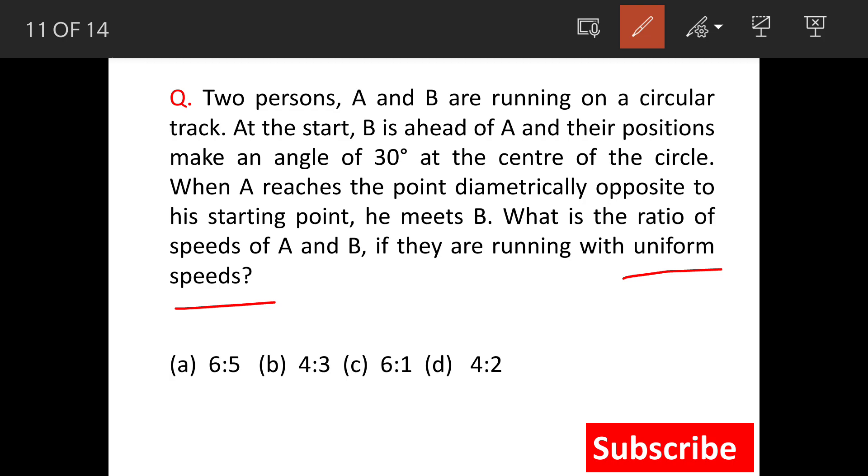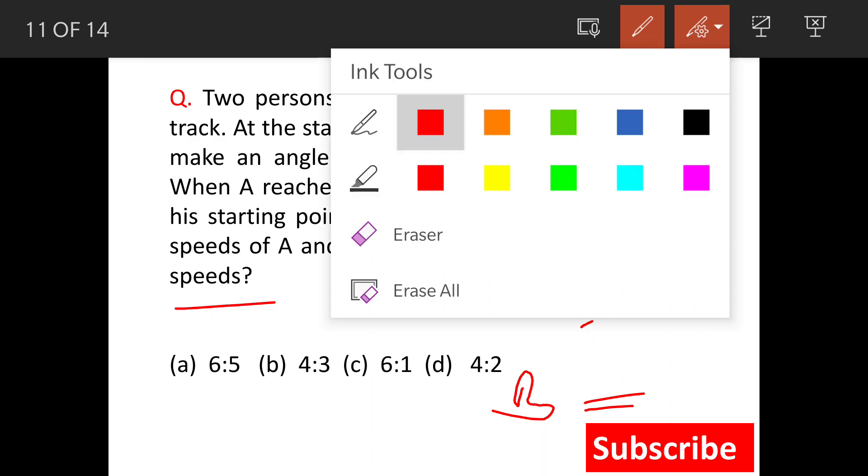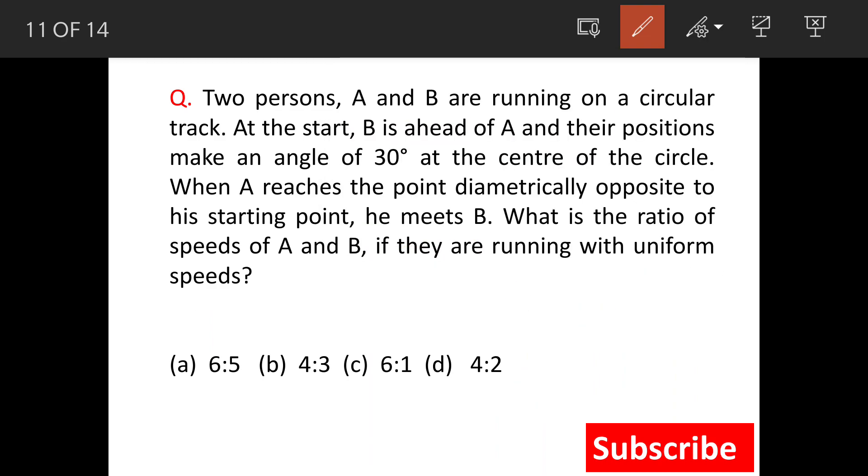Now uniform speed doesn't mean that A and B are going at the same speed, because if they were going at the same speeds then A would not have met B. So their speeds are different, but whatever are their speeds, they are the same throughout the run.